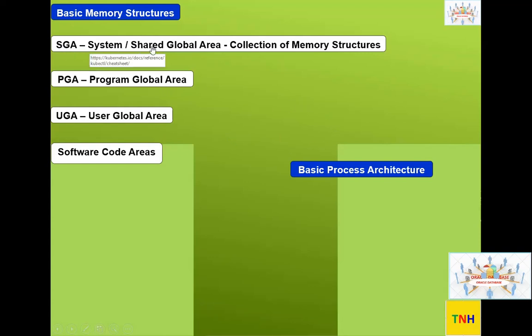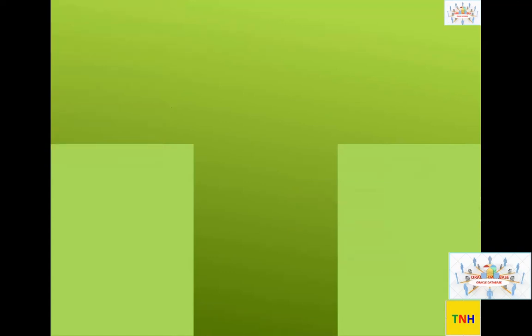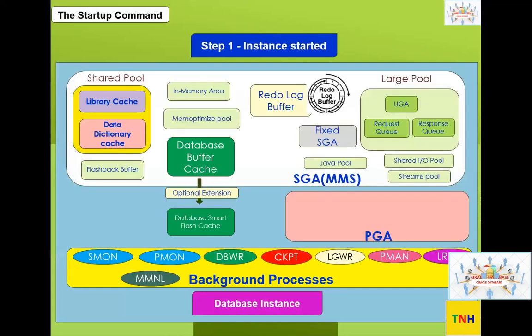Still we are here at the system global area. Let's try to finish this — we are still at a high level, at the definition level. We are just getting the basic understanding of the memory structure. Then we will continue with the rest of this architecture.